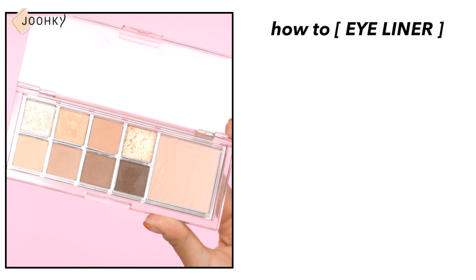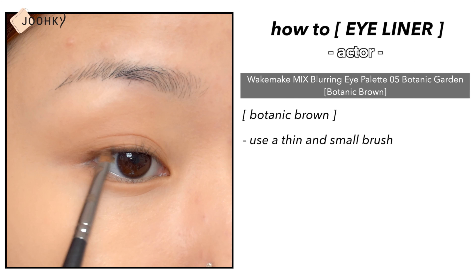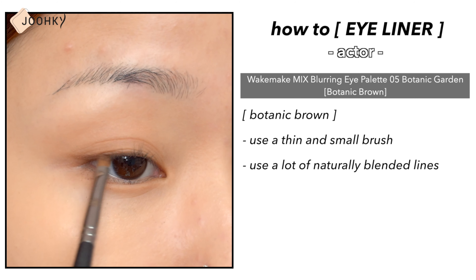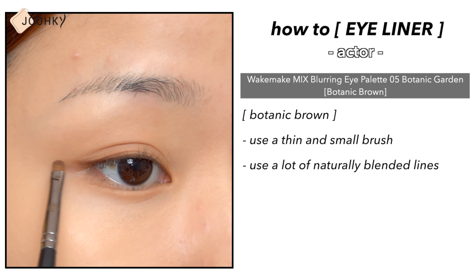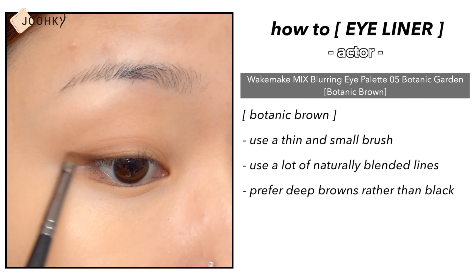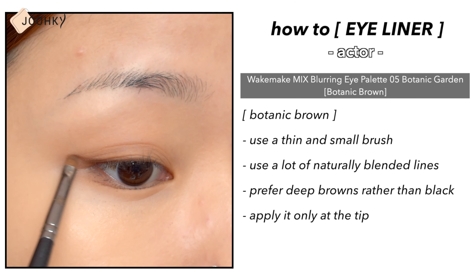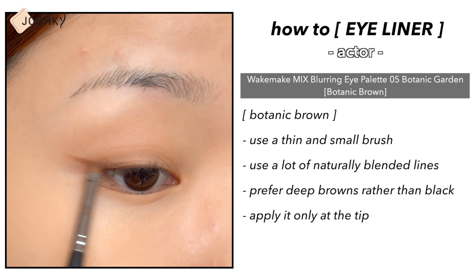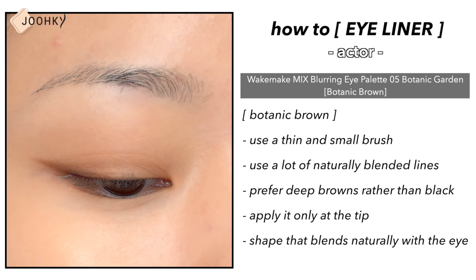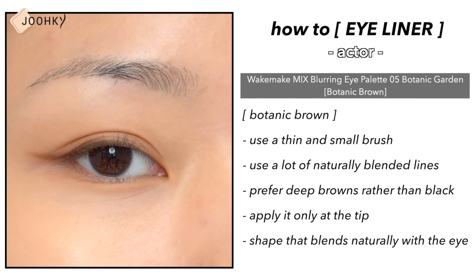For the eyeliner in actor makeup, it's better to use a shadow color rather than a brush pen, which would be too thick. Rather than strong vivid lines, actors use a lot of naturally blended lines and prefer deep browns rather than blacks. Rather than filling in the gaps between the eyelashes, it's better to apply it only at the tip, and to draw it in a shape that blends naturally with the eye rather than being too long or with the tail raised.